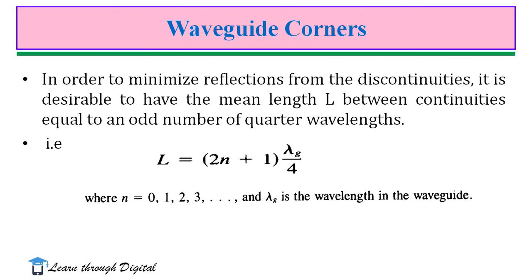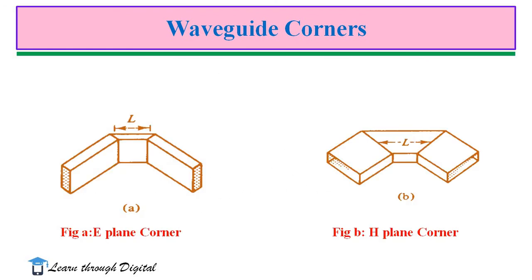L equals 2n plus 1 lambda g by 4. So, observe that here this is the length L. This length L should be the odd multiples of lambda g by 4.